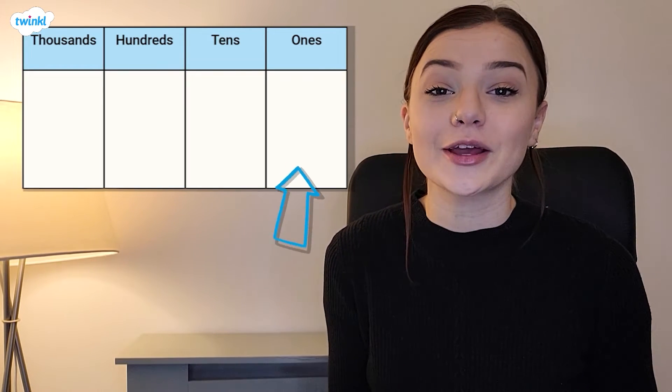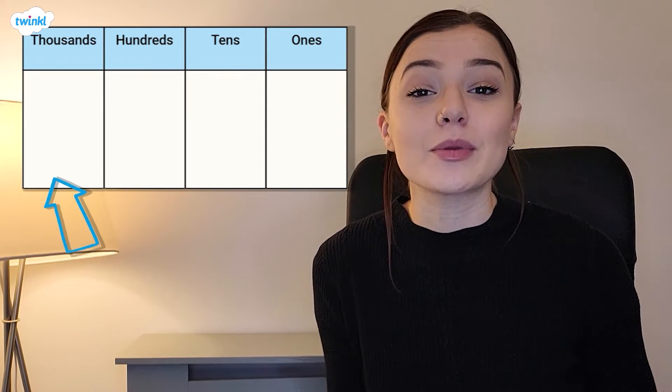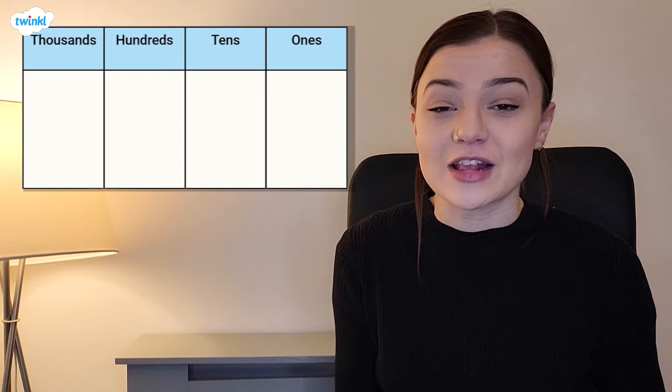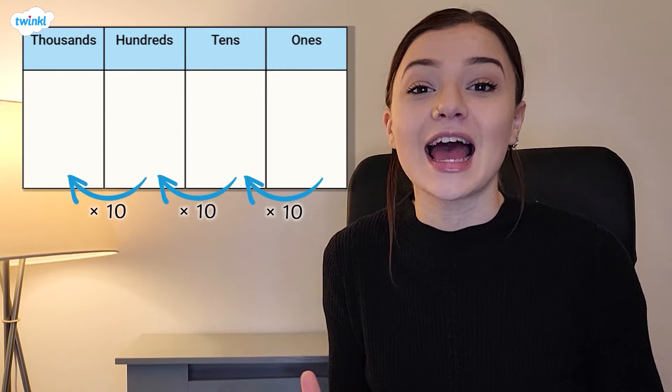Here is the place value chart. As you can see, we have the ones column, the tens column, the hundreds column, and the thousands column. As we move from right to left across the place value chart, the value of each column is 10 times the size as the column before.